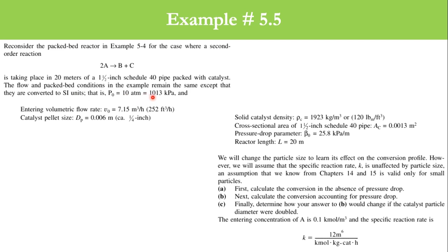which equals 1013 kilopascal. The entering volumetric flow rate V0 equals 7.15 cubic meters per hour or 252 cubic feet per hour. Catalyst pellet size Dp is 0.006 meter or 0.25 inches. The solid catalyst density is 1923 kg per cubic meter or 120 pound mass per cubic feet.